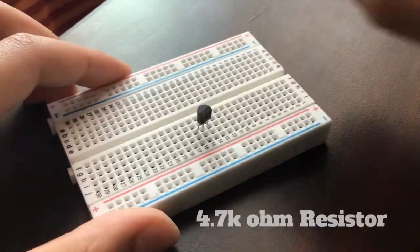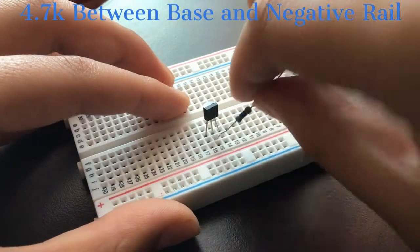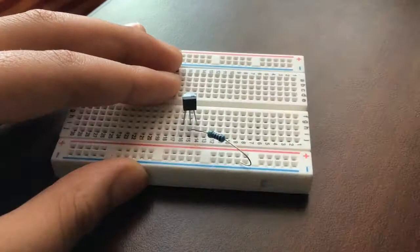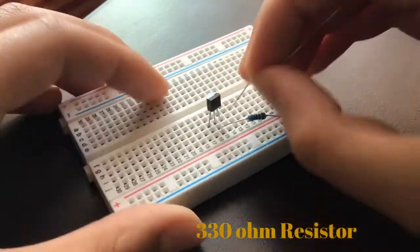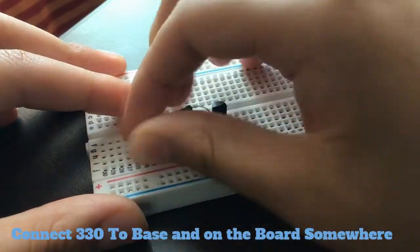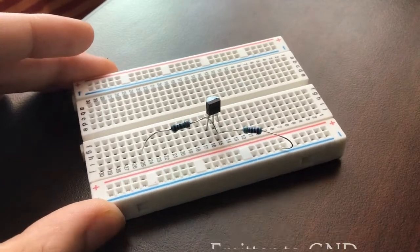Place your transistor on the board and connect its middle pin or base to ground via a 4.7 kiloohm resistor. Then you connect one of your 330 ohm resistors between the base of the transistor and somewhere else on the breadboard.